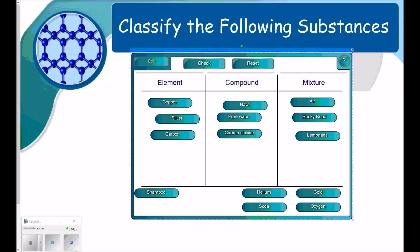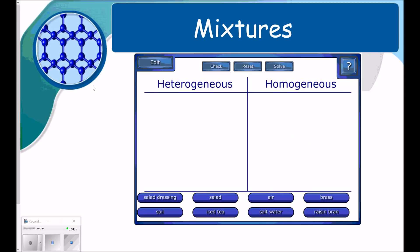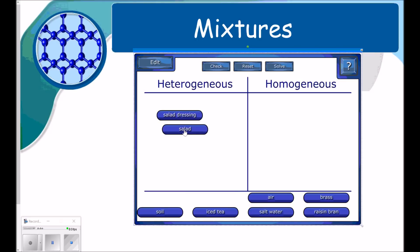Let's look at our next example. In this example, we are comparing and contrasting heterogeneous and homogeneous mixtures. Remember, heterogeneous being where you can see the difference, and homogeneous where it looks like one thing. So salad dressing, like Italian salad dressing, is going to be heterogeneous. Salad, I can see the different pieces. Iced tea, I can't. It looks like one thing, so it's homogeneous. Homo, meaning one. Air, it looks like one thing. It's just a clear gas, but it's made up of a bunch of stuff.